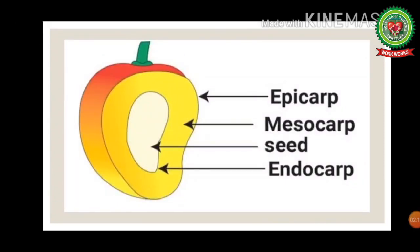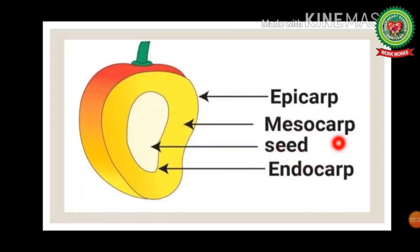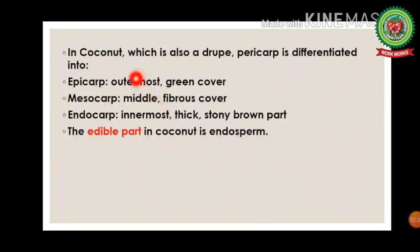In mango, the pericarp is differentiated into three distinct layers: the epicarp, which is the outer thin layer; the mesocarp, which is the middle fleshy layer that we eat; and the endocarp, which is the innermost layer. The endocarp provides protection to the seed, as clearly indicated in the image.